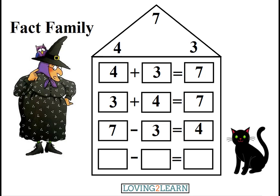Let's do another one, Midnight says. Let's start this problem with 7 minus 4 equals what? 3! Count backwards: 7, 6, 5, 4, 3. Or we know that 7 minus 4 equals 3.